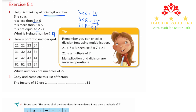Question 2 says here is part of a number grid. We have some numbers and it asks which numbers are multiples of 7. There is a tip that says remember you can check a division fact using multiplication. For example, 21 divided by 7 is equal to 3, because 3 times 7 is equal to 21.